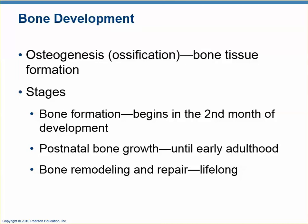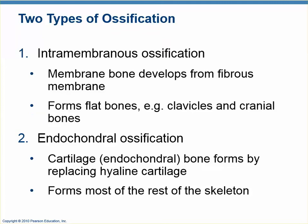There is the initial formation of bone in the fetus, then postnatal bone growth — the growing stage — and then through childhood and adulthood there is bone remodeling: the repair and maintenance of bone. Bone forms in one of two ways.